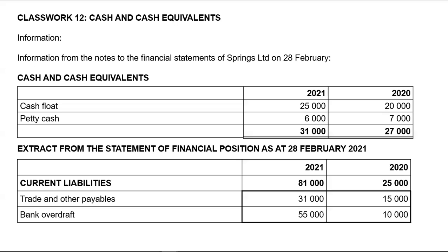So we are going to have the difference between this year's bank overdraft and last year's bank overdraft as a cash outflow, since an increase in bank overdraft is regarded as a reduction of your bank account. When you think about it, it means that your bank account is going more into the negatives.